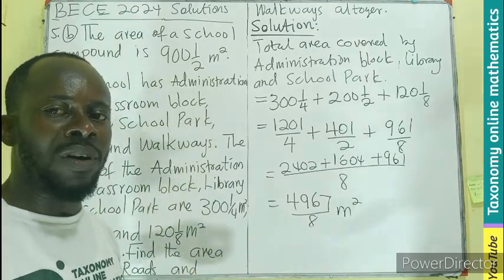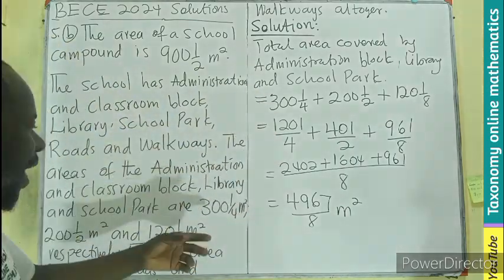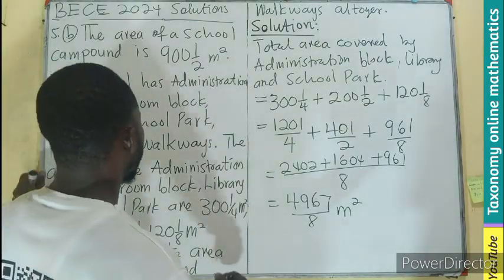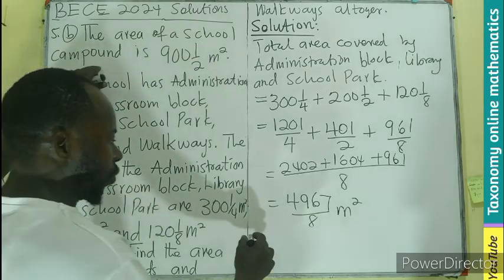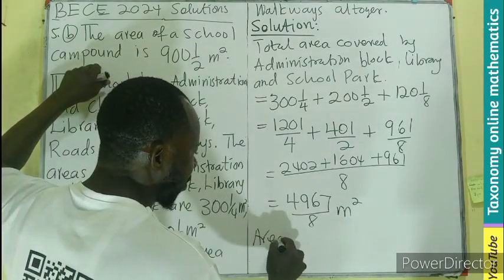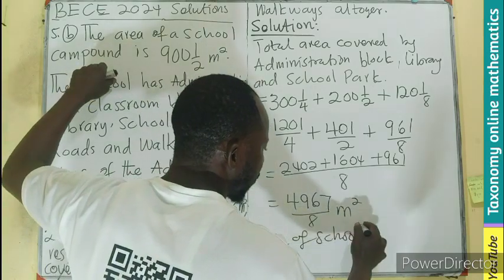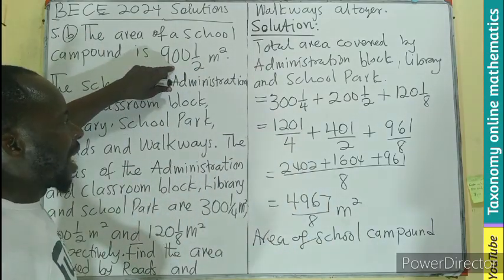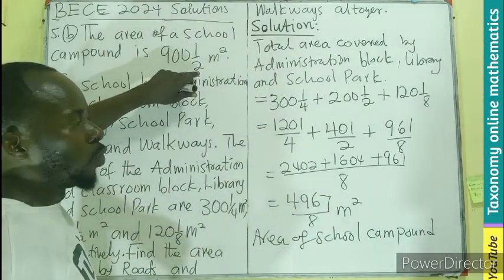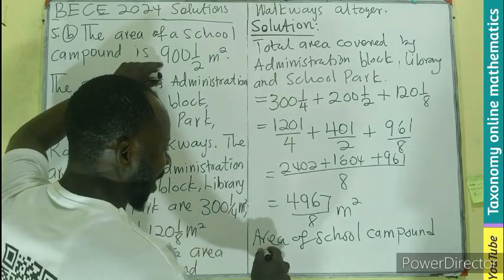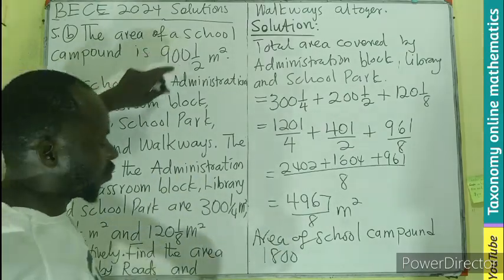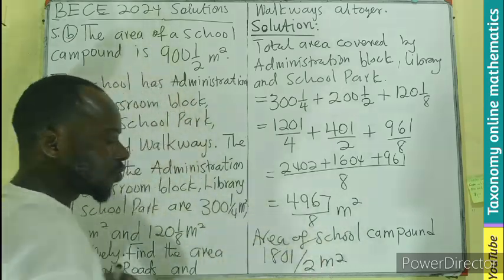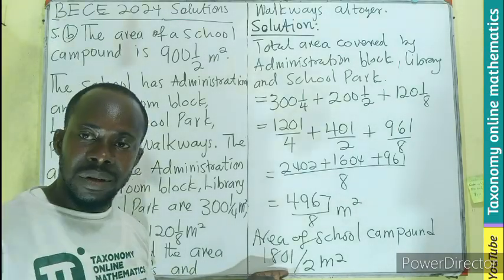Now we need the total area of the school compound. The area of the school compound is 900 and 1/2. Converting to an improper fraction: 2 times 900 is 1,800, plus 1 gives 1,801 divided by 2 meters squared. This is the total area being covered.